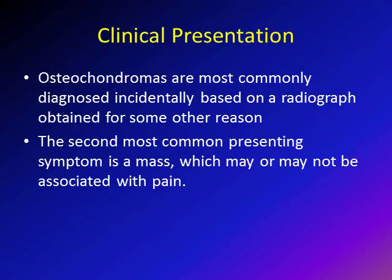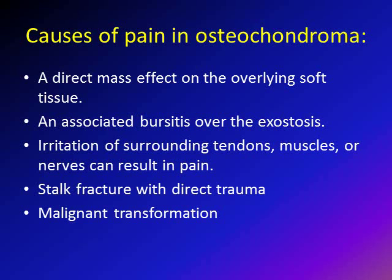Regarding clinical presentation, osteochondromas are usually diagnosed as an accidental finding on an x-ray taken for other reasons — for example, a child with an ankle sprain gets an x-ray and an osteochondroma of the distal tibia is found. The second most common presenting symptom is a palpable bony mass, such as at the distal femur, which may or may not be associated with pain.